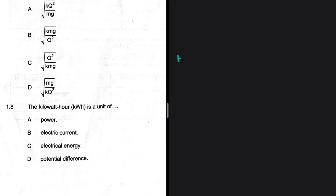So the answer to 1.9 is D — the commutator rotates anti-clockwise. For 1.8: the kilowatt-hour is a unit of what? Power is option A, electric current is amperes, potential difference is volts. By elimination, the kilowatt-hour is a unit of electrical energy — that is the correct answer for 1.8.